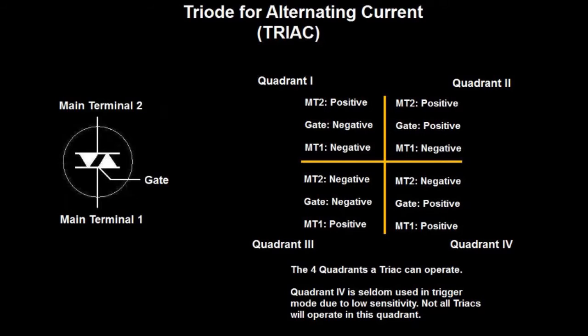These are showing the different phases or quadrants that the transistor can work with the trigger. Now, quadrant four is seldom used because in trigger mode, the TRIACs have low sensitivity in quadrant four. Not all TRIACs will even operate in the quadrant because it's less sensitive. Most of the time, they operate either in quadrant one, two, or three.